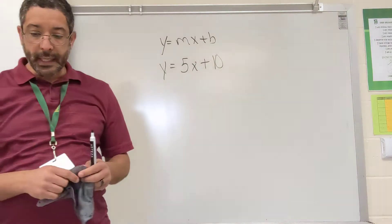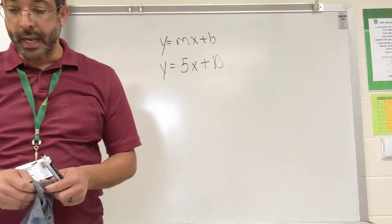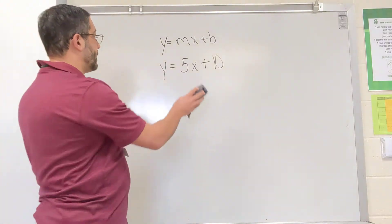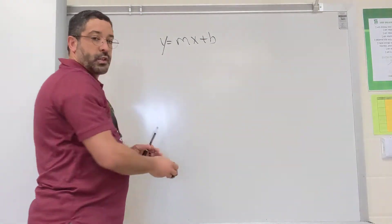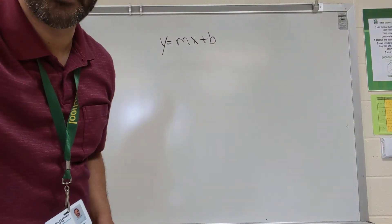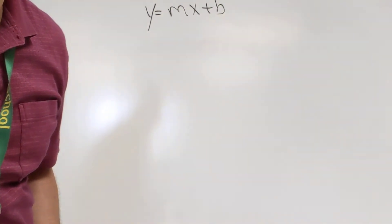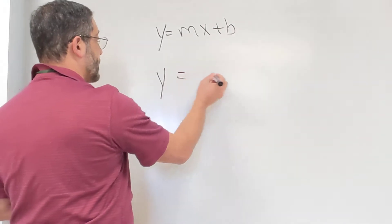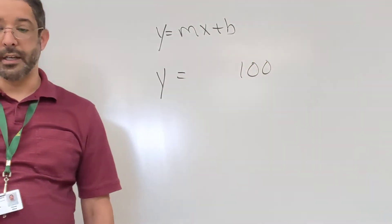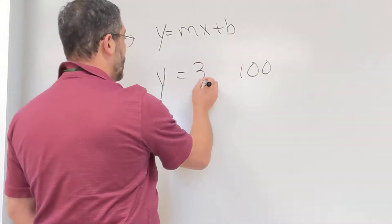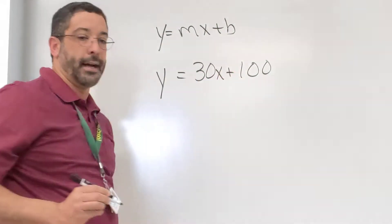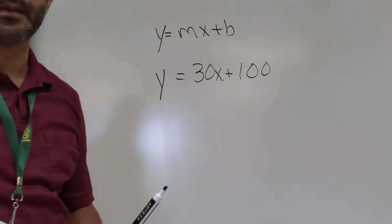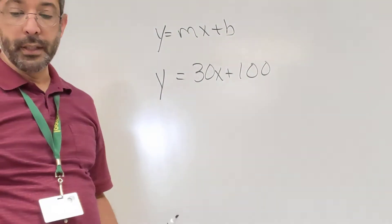Then for the next one, it says Toby operates a catering service and charges $100 for setup and $30 per hour for an event. Just to have Toby show up to cater your party, you're going to pay $100 — that's the starting point. So y = 30x + 100, where 30 indicates change per hour and 100 is the starting point.